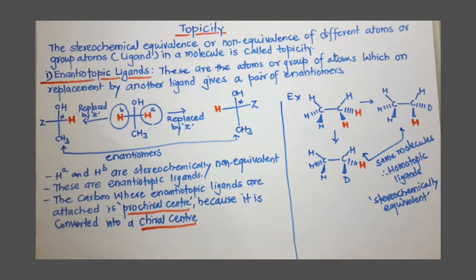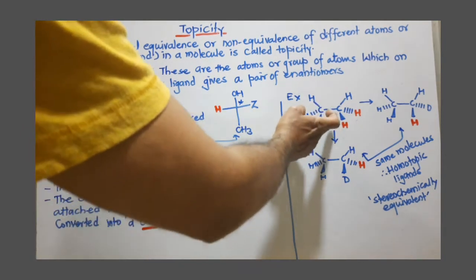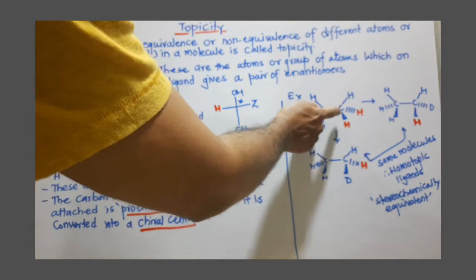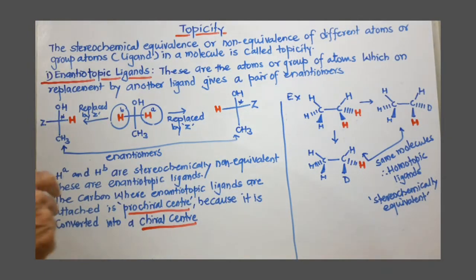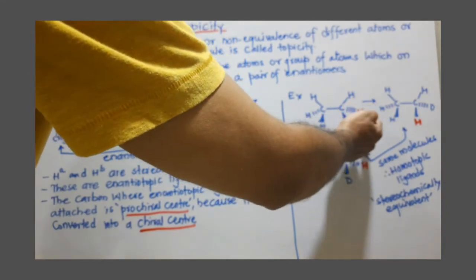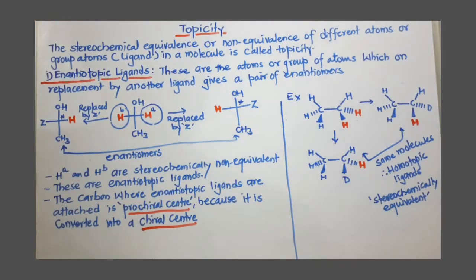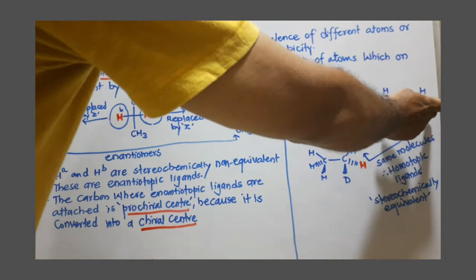I hope you understood the meaning of enantiotopic ligands. Now here is one more example: ethane. I have to decide whether these two red colored protons are equivalent or not. We can decide by replacing these protons one by one with another atom — in this case I have used D, deuterium.